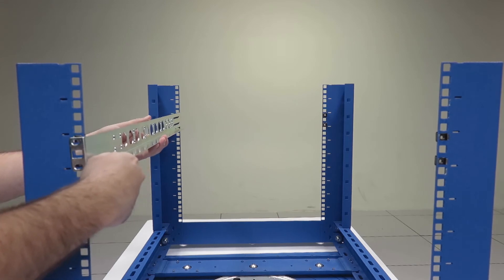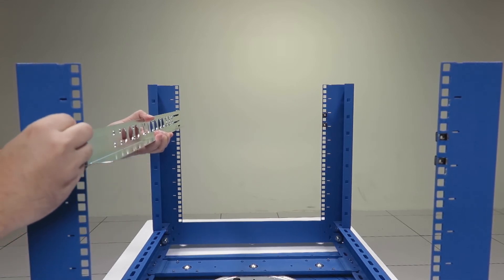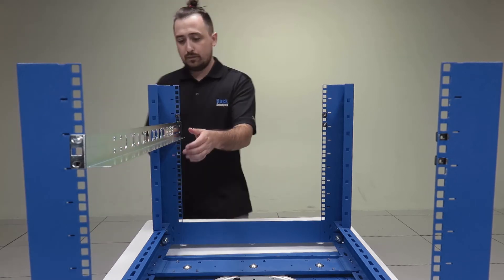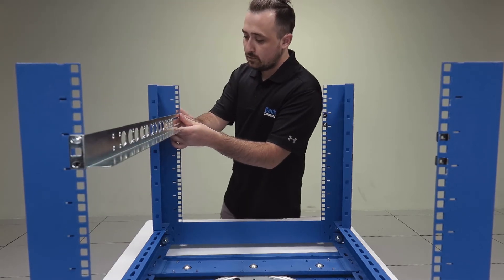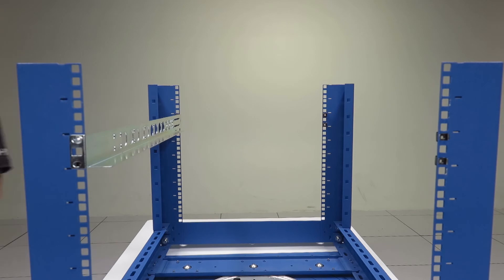And now that your cage nuts and rail is ready, it should be pretty easy to install. I like to begin the installation by threading in a screw by hand in one of the uprights, then moving to the other side and threading in another.